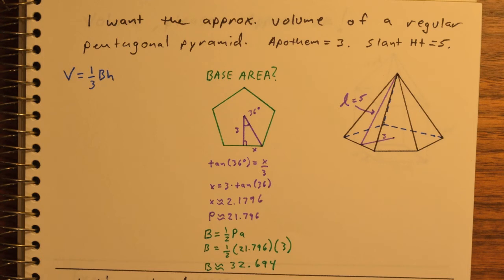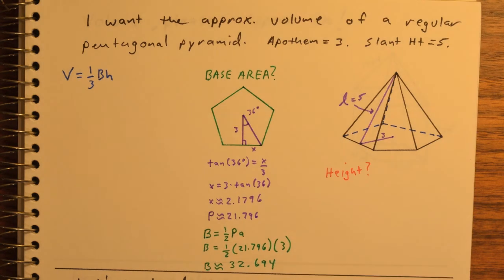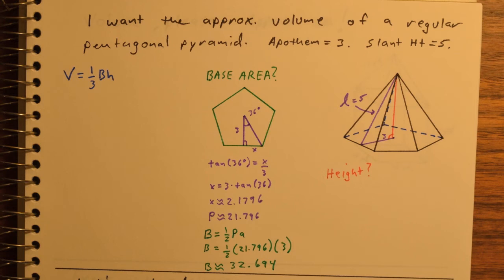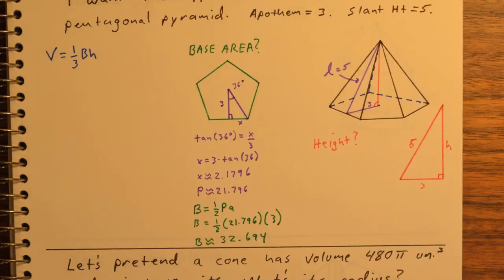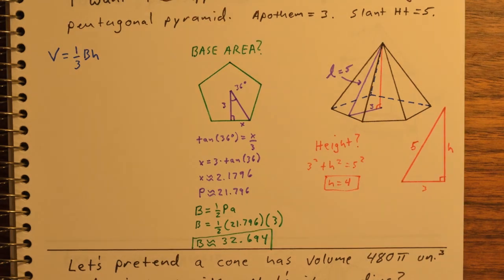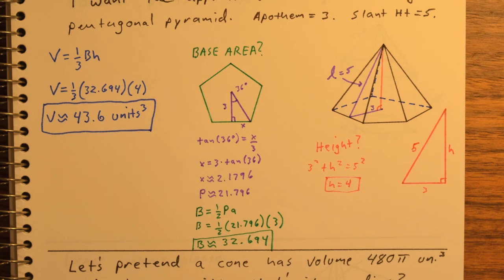Then I need to find the height of the pyramid. I'll find that height using that right triangle that's made up of the apothem, height, and slant height. Pythagorean theorem says that the height of this pyramid must be 4. So I sub in the base area I found, I sub in the height that I found, and we get a volume of 43.6 cubic units.